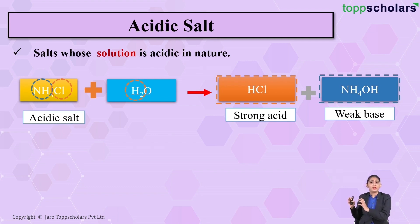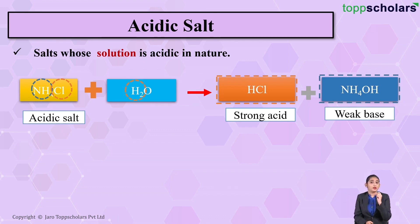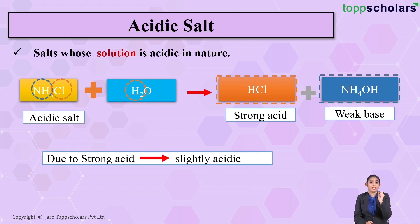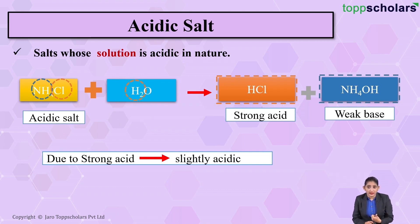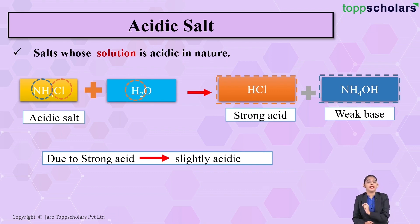Here in this case, we've got HCl, and HCl is a strong acid. Since a strong acid is formed, that is the reason why the solution is slightly acidic. So here we saw that acidic salt — ammonium chloride — when dissolved in water, gives us a strong acid and a weak base, making the solution slightly acidic.